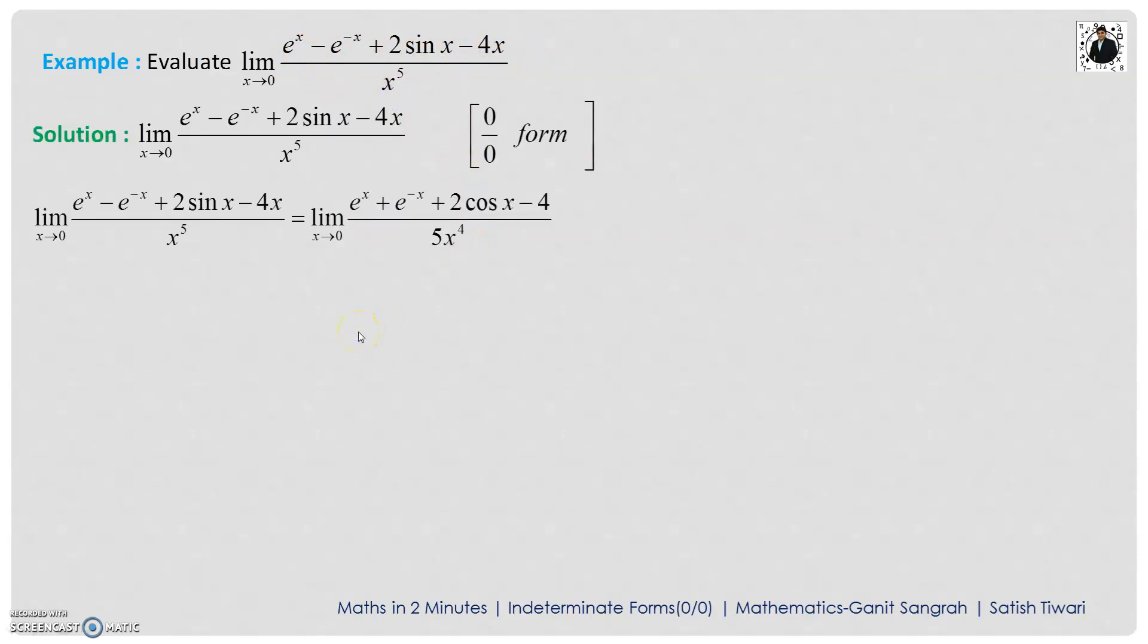So I can apply L'Hôpital's rule and I will differentiate the numerator and the denominator separately. Now I differentiate the numerator. What is the derivative of e to the power x? It is e to the power x. Derivative of e to the power minus x is what? e to the power minus x into minus 1. Derivative of sin x is what? Cos x, and the derivative of x is what? It is 1. Therefore, minus 4 is here. The derivative of x to the power 5 is what? It is 5 x to the power 4.